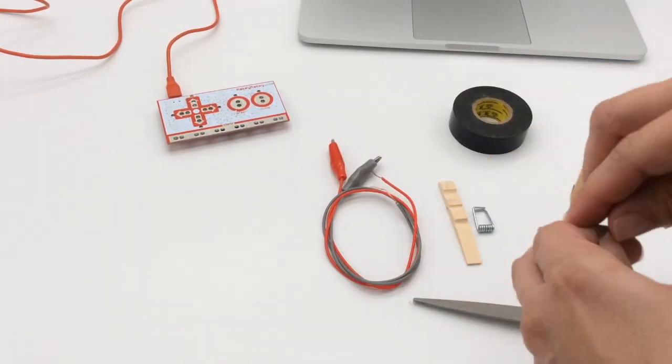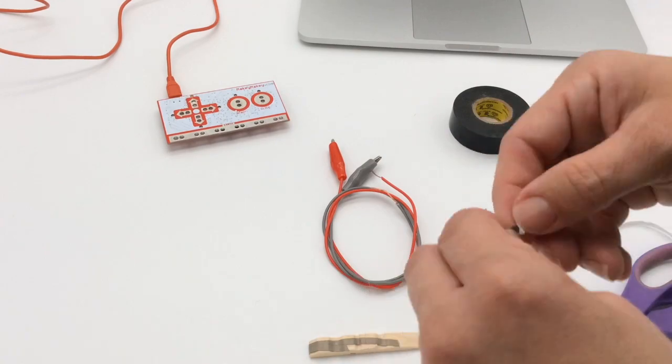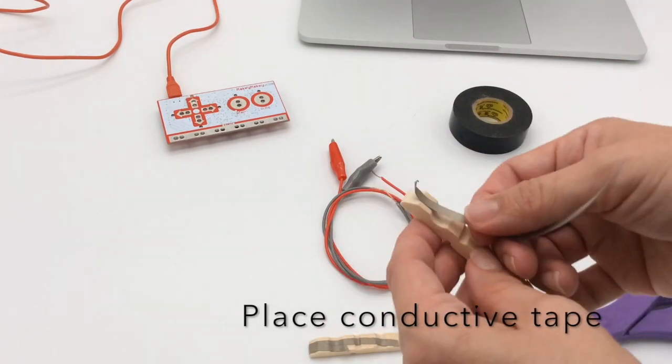You'll use the fabric tape from the Inventor Booster Pack and put it on the teeth of each piece of the wooden clothespin.